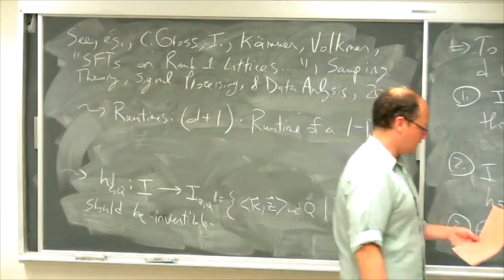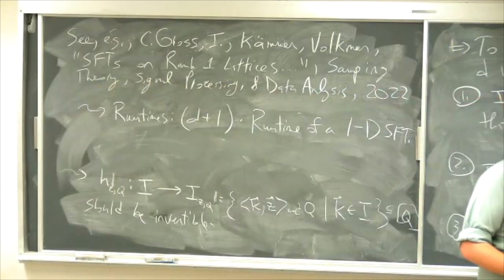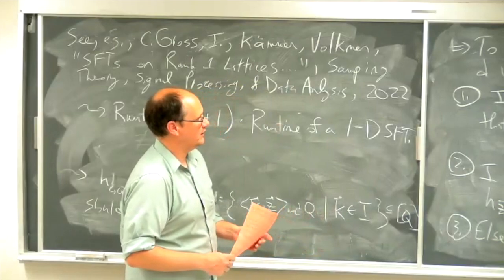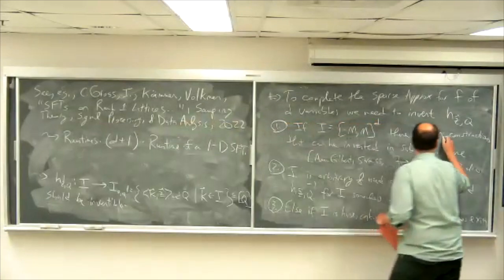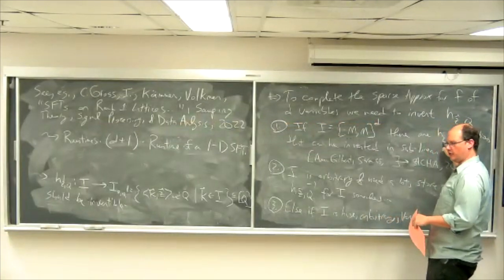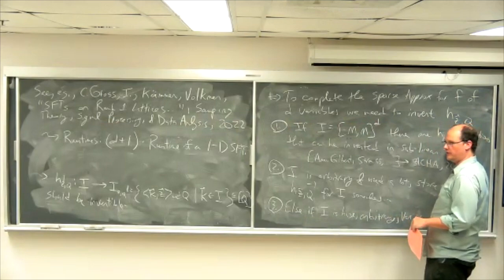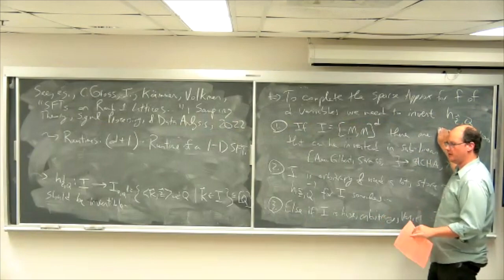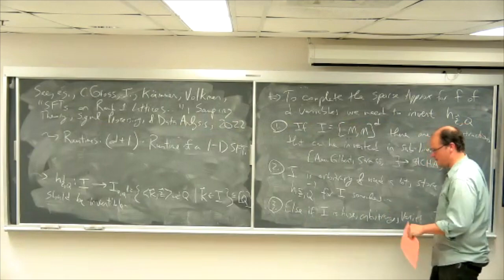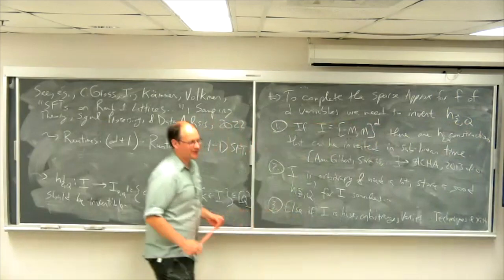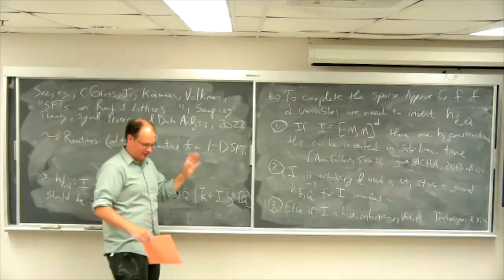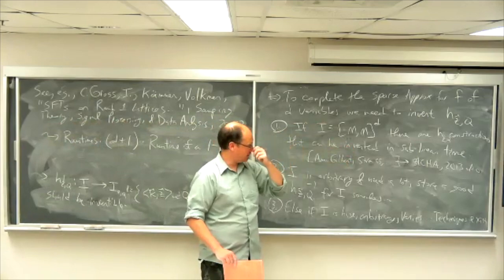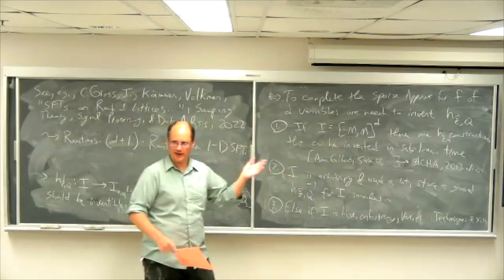Let me give a slightly less known way of very easily constructing a rank one lattice—the last thing I'll do. When I said there are H constructions that can be inverted, I didn't want to call it h_{z,q} because the z is a little bit different than the way we defined it here—it actually depends on multiple values of Q. But it's one of these types of functions associated with a lattice that isn't quite a rank one lattice, but it's morally the same thing—some very similar type of map from index vectors of integers to integers that you can invert quickly.